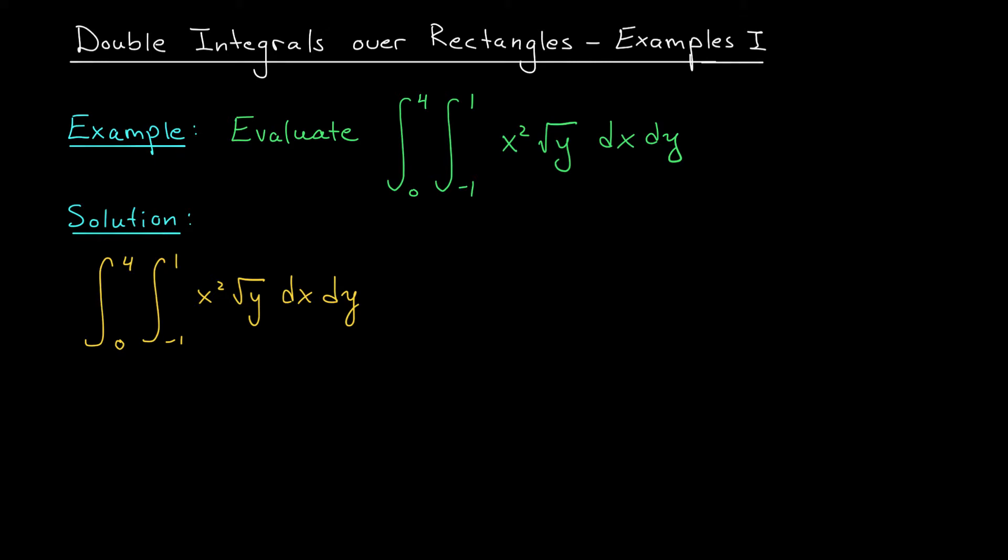So in this example, we're first tasked with evaluating this inner integral, the integral from minus 1 to 1 of x squared root y dx. Okay, the dx is saying that we're integrating with respect to x, which means all other variables are going to be treated like constants. But otherwise, we integrate as normal.